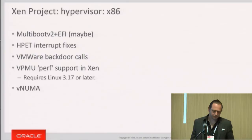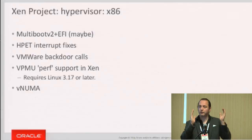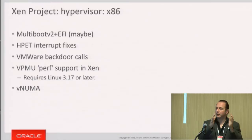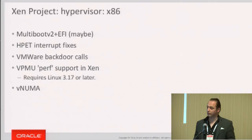VMware backdoor support is pretty neat. You take a guest that runs on VMware, run it in Xen, move it from VMware to Xen, and the customer sees no difference. I'm looking forward to having it in Xen 4.5.